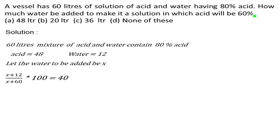हमें यहाँ पे दिया है 60% acid। किसी solution में अगर 60% acid है और उसमें acid और water ही है, तो बची हुई संख्या 40% water होगी। तो equal to 40% रखेंगे। अगर 40% water लिया तो automatically 60% acid हो जाएगा। इसलिए हम यहाँ 40 लिख रहे हैं, 60 नहीं।